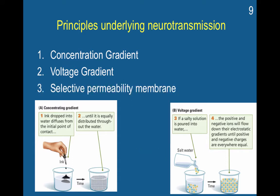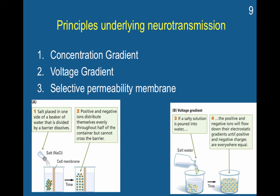The final element is that you have a selectively permeable membrane, which we touched on in the last chapter and will continue discussing. If you have salt placed in one side of a beaker divided by a barrier, it will dissolve and become equally distributed through the voltage gradient on that side. The ions won't be able to pass through to the other side — they cannot cross the barrier. Selective permeability means certain things will be able to pass through.